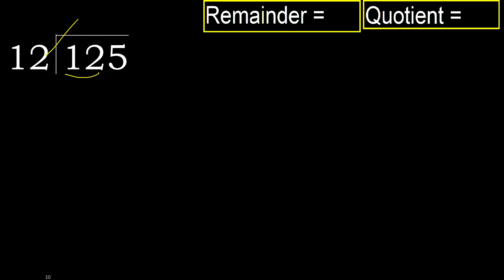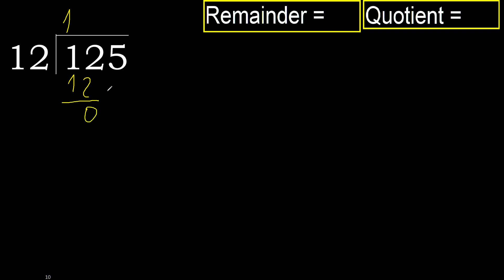12, but not greater. 12 multiplied by 2 is 24, which is greater. Multiply by 1: 12 is not greater, ok. 12 minus 12 equals 0.